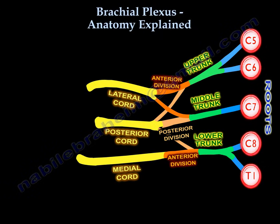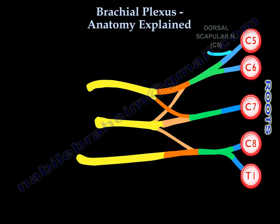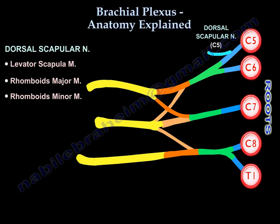To summarize: we've seen the roots from C5 to T1, the trunks — upper, middle, lower — the divisions — anterior and posterior — and the cords — lateral, posterior, and medial. Now let's look at the branches. Starting with branches from the roots and the upper trunk, these are preclavicular branches, meaning injury can give a bad prognosis.